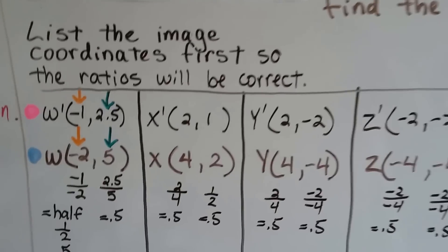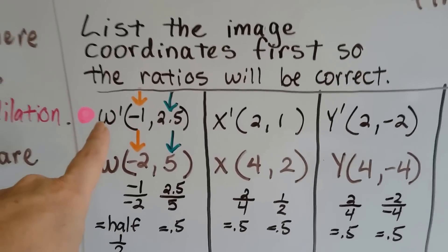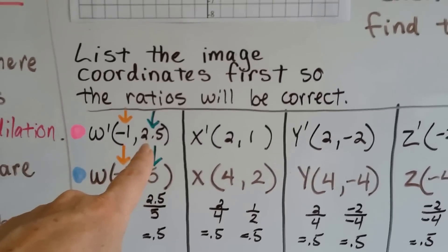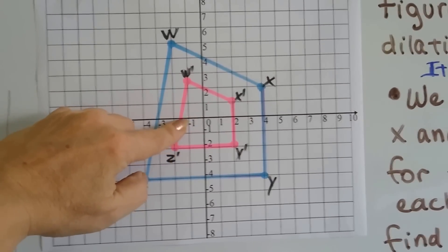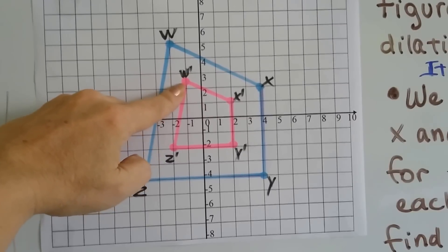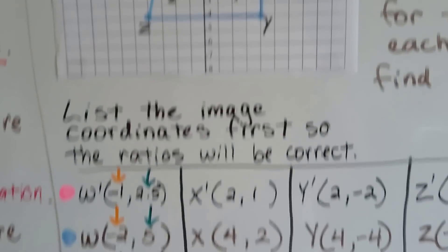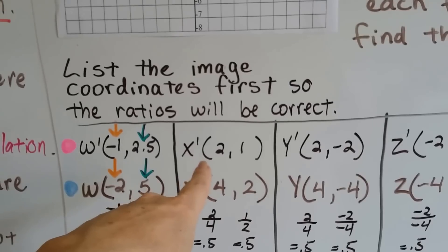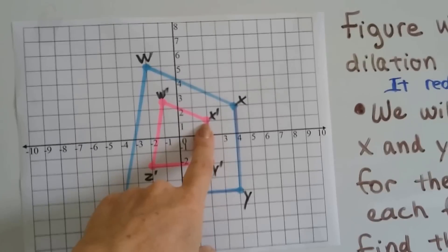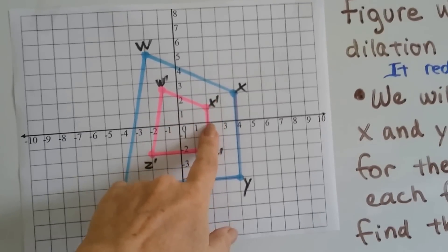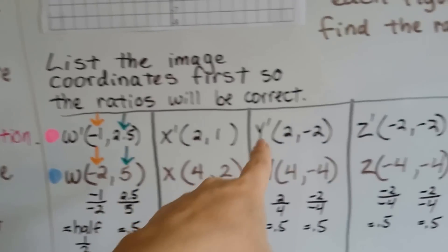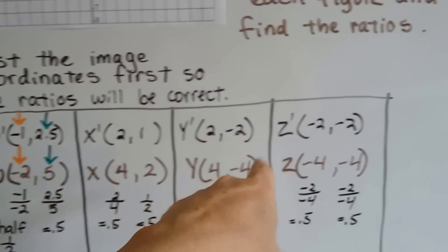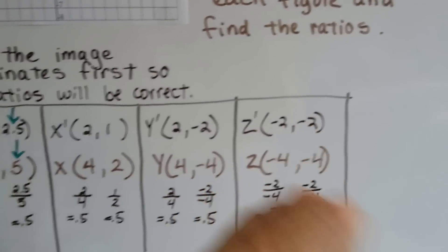So what we've got for the pink one is w is at negative one and two and a half. w is at negative one on x and two and a half on y. See, it hits y at two and a half. x prime is at two, one. x prime right here, see the prime symbol, the tick mark, is at two on x and one on y. y prime is at two, negative two. z prime is at negative two, negative two.